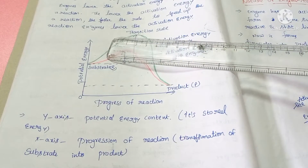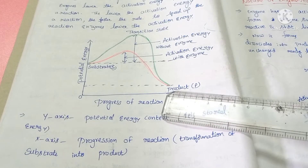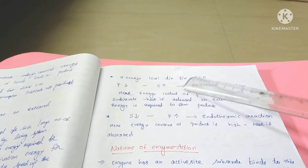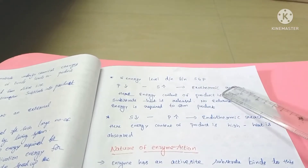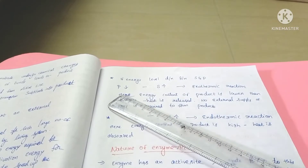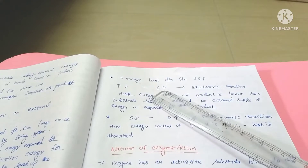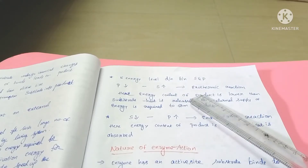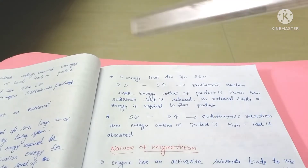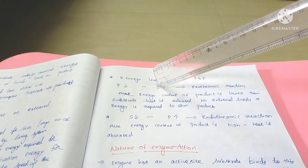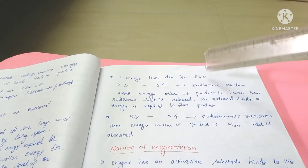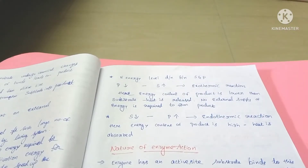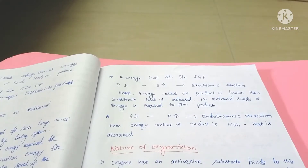In this graph, the substrate is present at one energy level and the product at another. In one type of reaction, the product has a low energy level and the substrate has a high energy level — that type of reaction is called exothermic. Exo means outside, thermic means heat — heat is released outside. The energy content of the product is lower compared to the substrate, heat is liberated, and no external supply of energy is required for the product. This type of reaction is called an exothermic reaction.